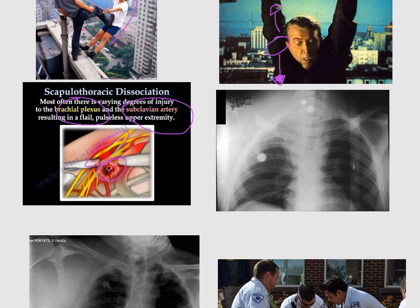After that, you have to do a chest X-ray. In the chest X-ray, we will see a swelling above the clavicle. This swelling above the clavicle is the result of a hematoma.